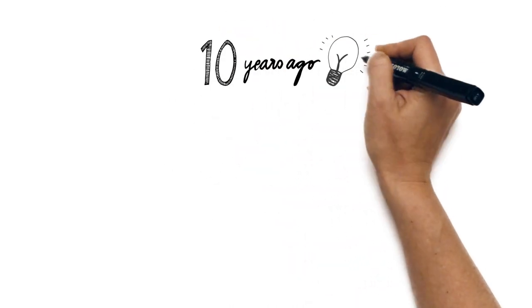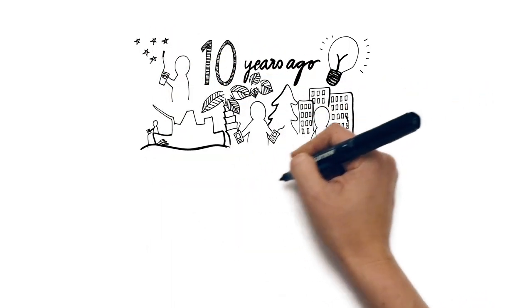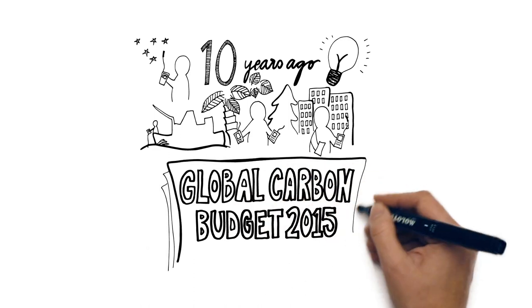Ten years ago, we had an idea. Let's get the carbon scientists together to keep track of carbon emissions and where they go in the environment. We look at the atmosphere, ocean, and forest, and at society. And here is the Global Carbon Budget 2015.